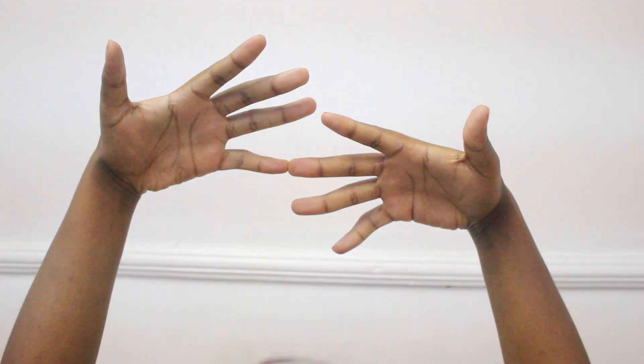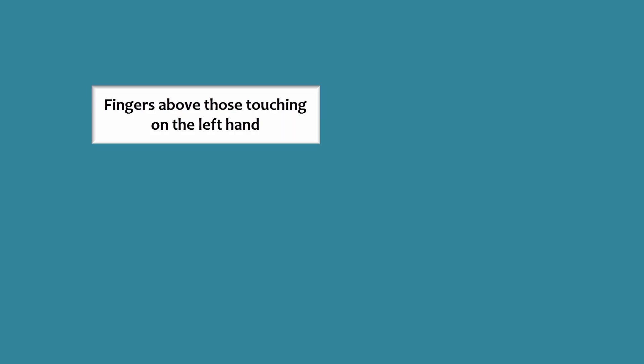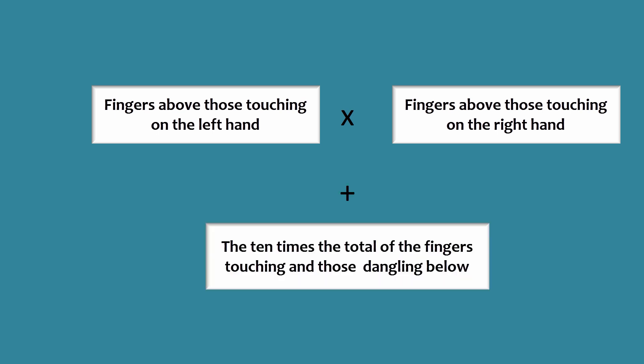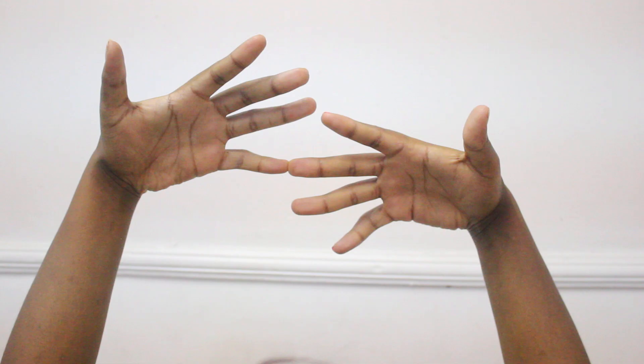Calculating the answer involves 3 steps. Fingers above those touching on the left hand times fingers above those touching on the right hand, plus 10 times the total of the fingers touching and those dangling below. In this example, fingers above those touching on the left hand are 4, and those above those touching on the right hand are 2.